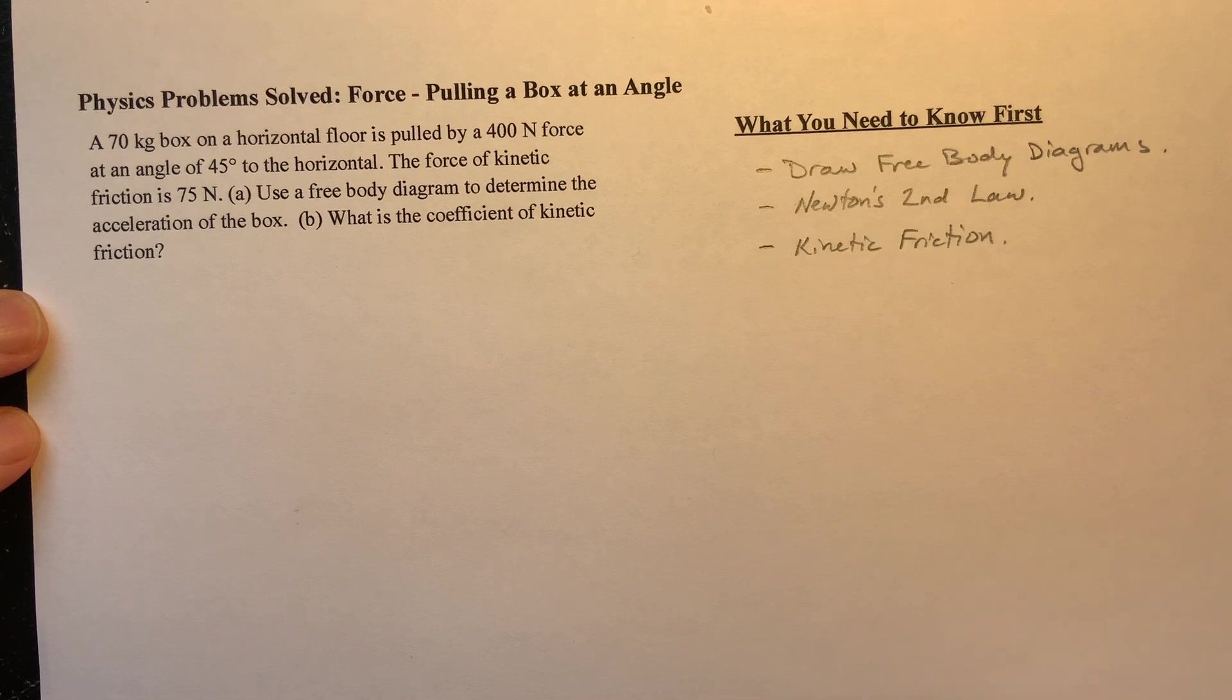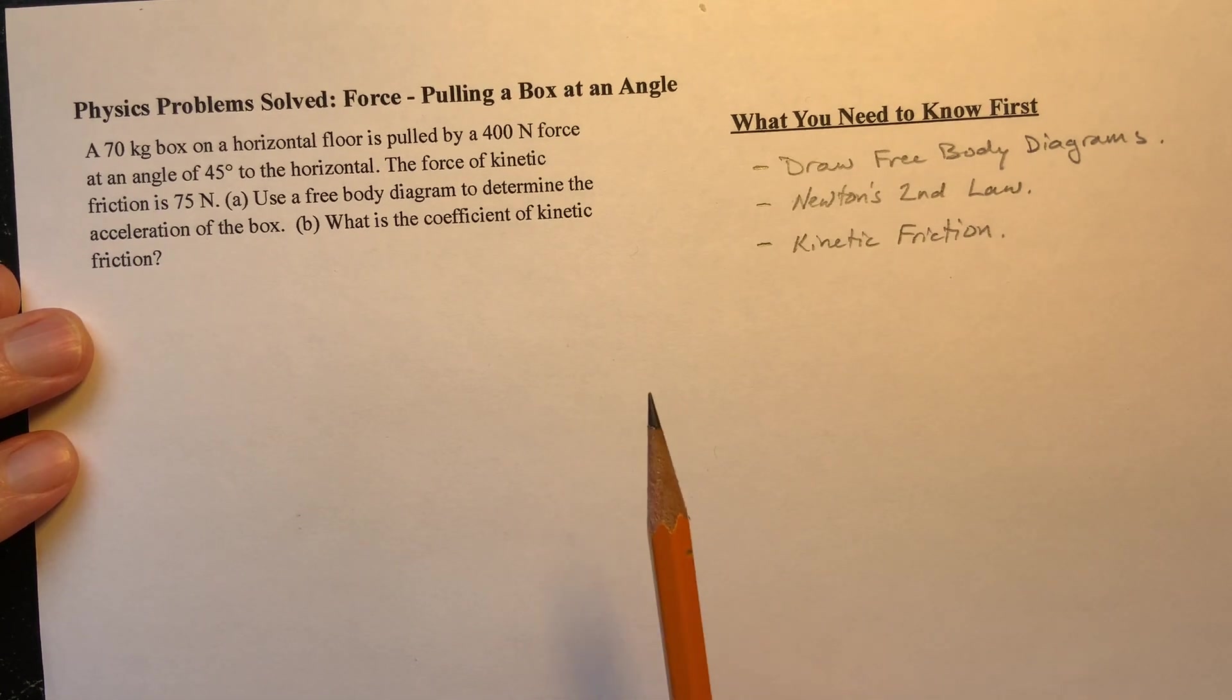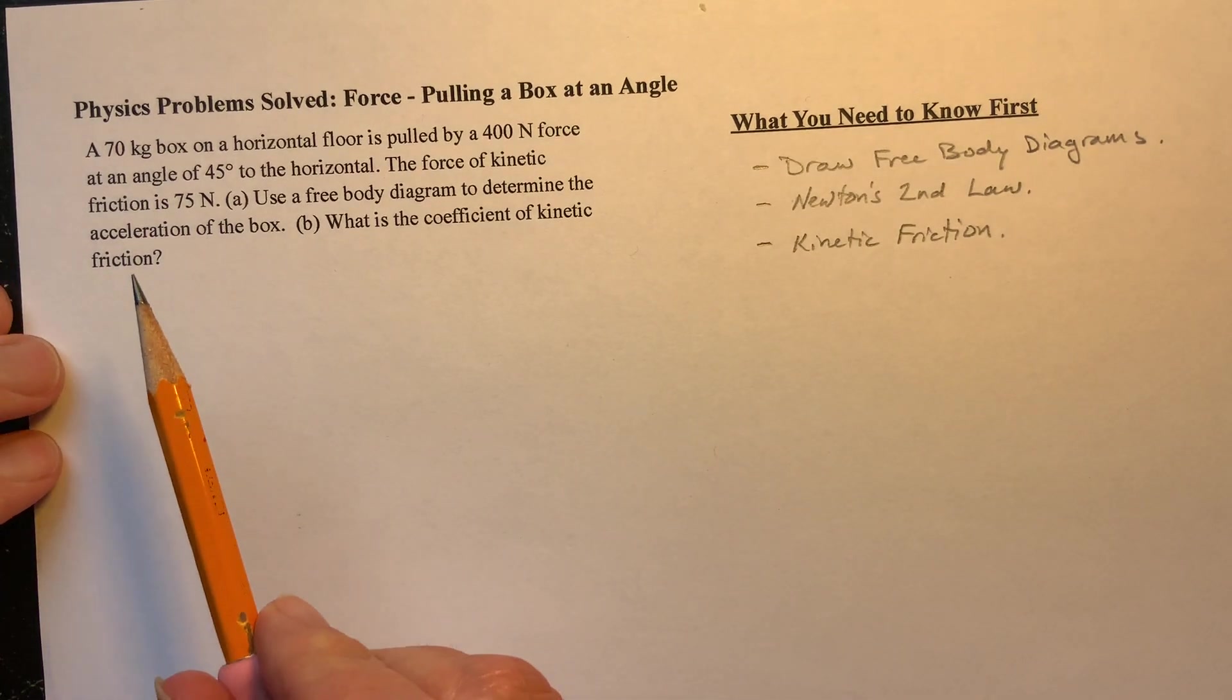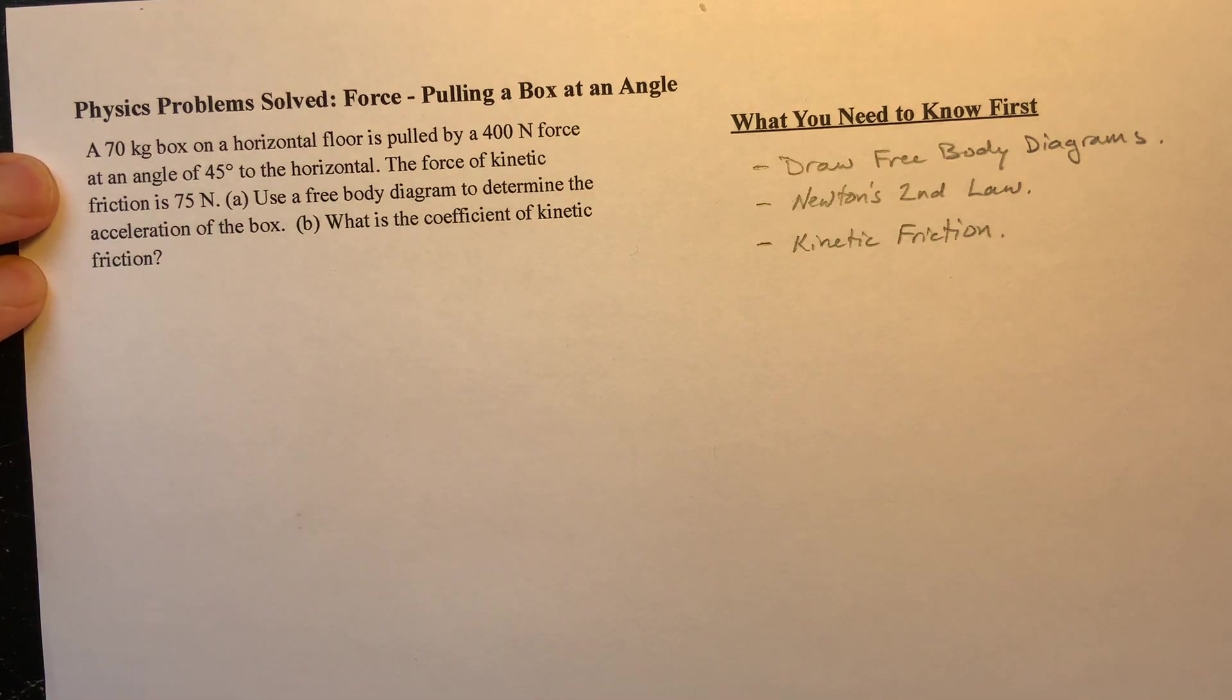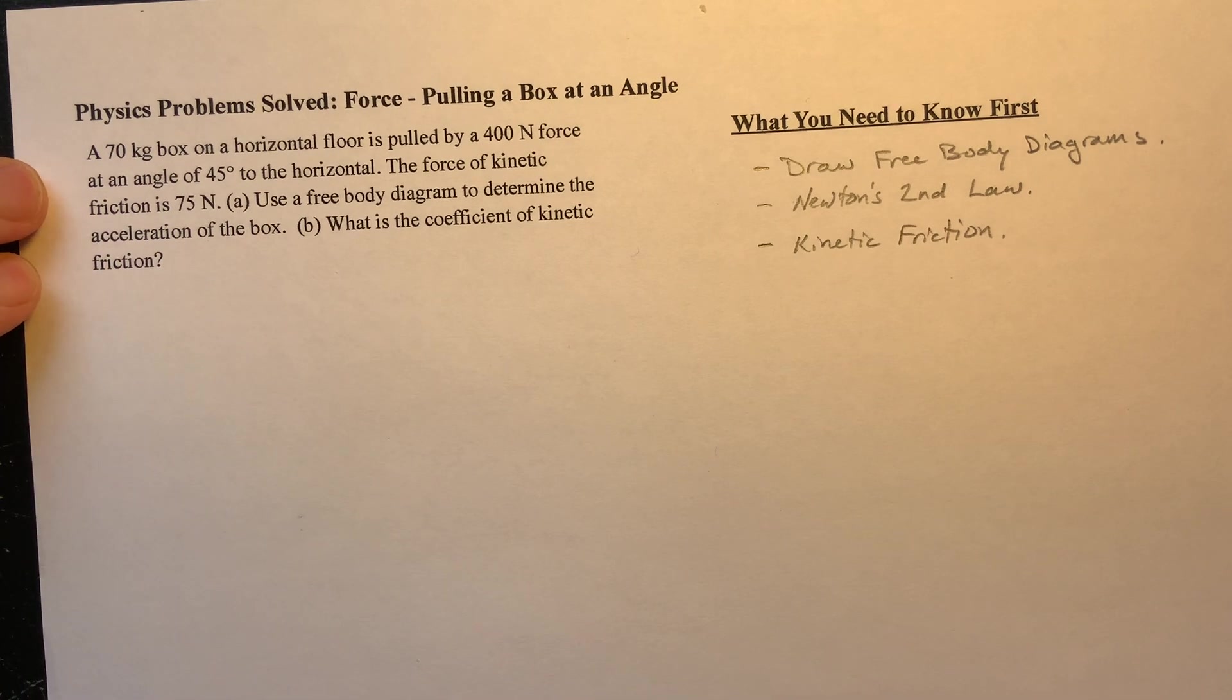Anyway, let's read the problem, and then what do you need to know? Okay, so here's a problem, and actually I got this from one of my tutoring students. We have a 70 kilogram box on a horizontal floor is pulled by a 400 Newton force at an angle of 45 degrees to the horizontal. The force of kinetic friction is 75 Newtons. Part A, use a free body diagram to determine the acceleration of the box. And Part B, what is the coefficient of kinetic friction?